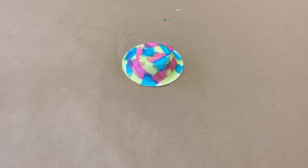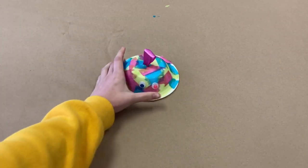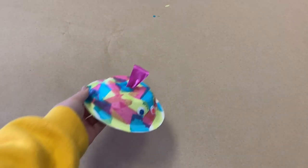Once your bowl is dry, add your googly eyes. Then make a hole at the top and feed your ribbon through. Tie it underneath to make a loop.